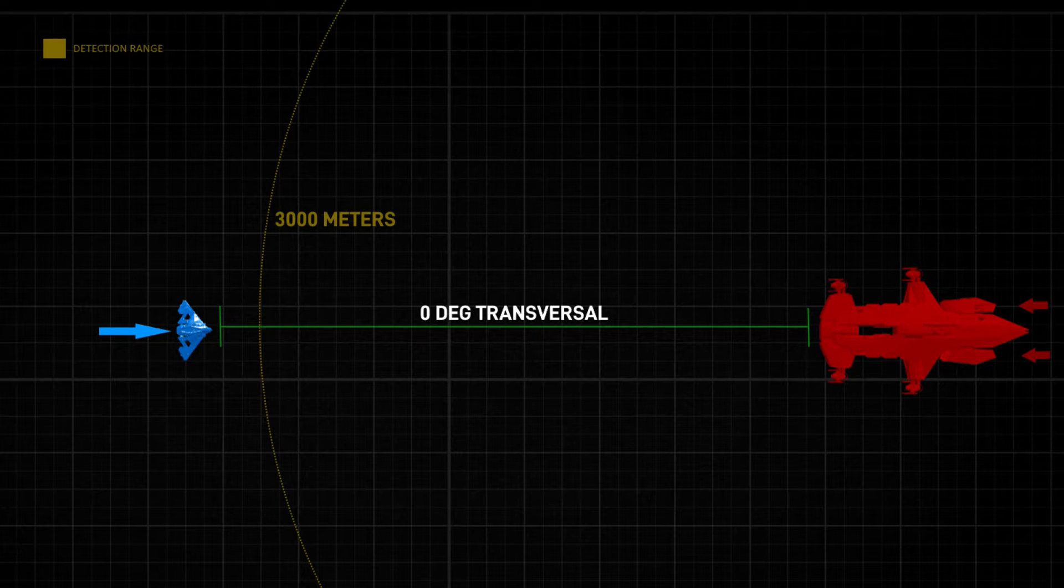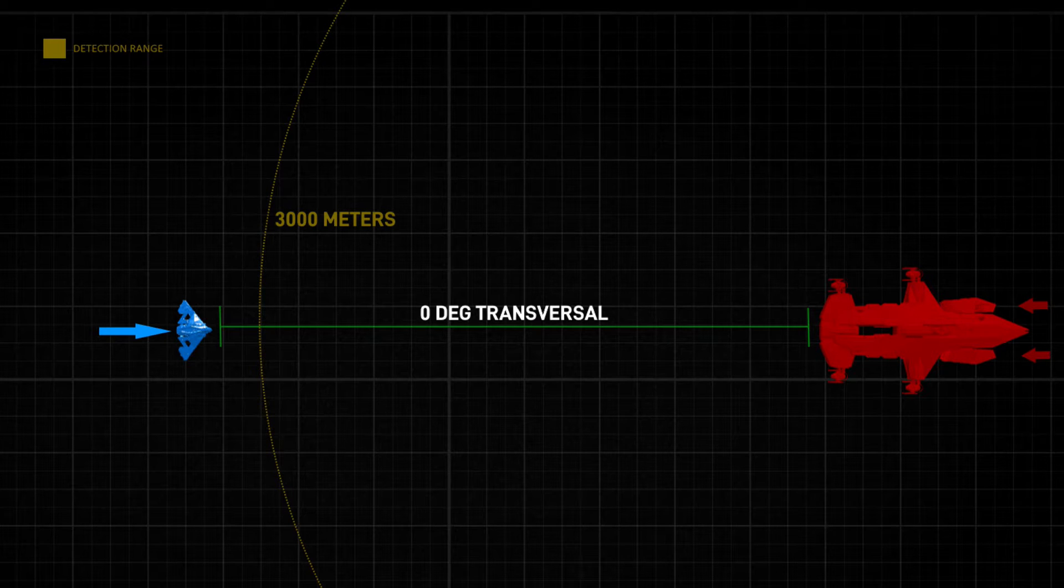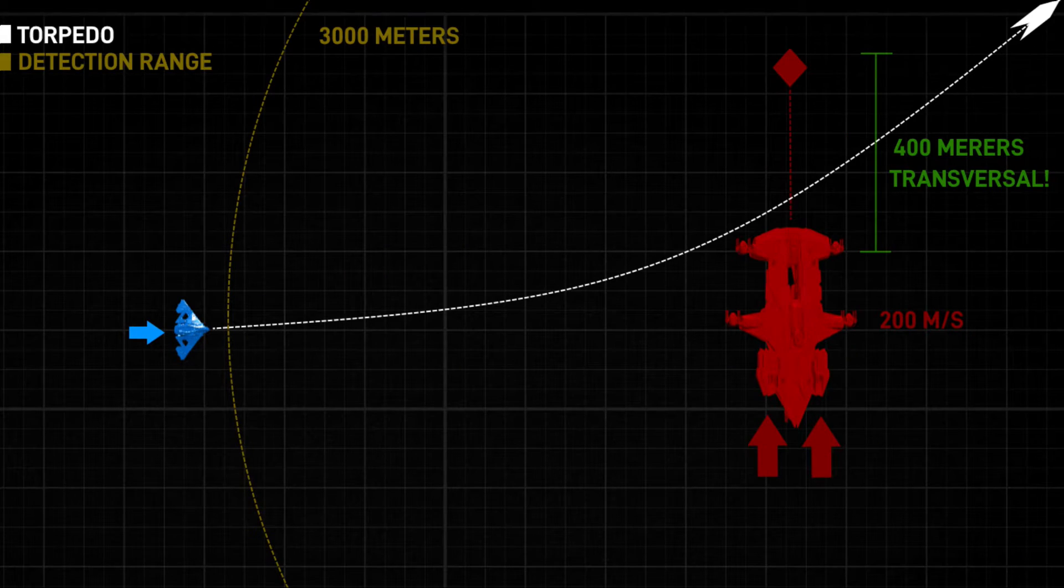So in this situation we have zero transversal, or otherwise known as a perfect shot. Now the orientation of the Hammerhead can change in the sense that it can be facing 90 degrees the opposite direction, but if it's not moving or if it's strafing in the same direction that I am approaching on, the transversal is zero because from my position to him it's all relative.